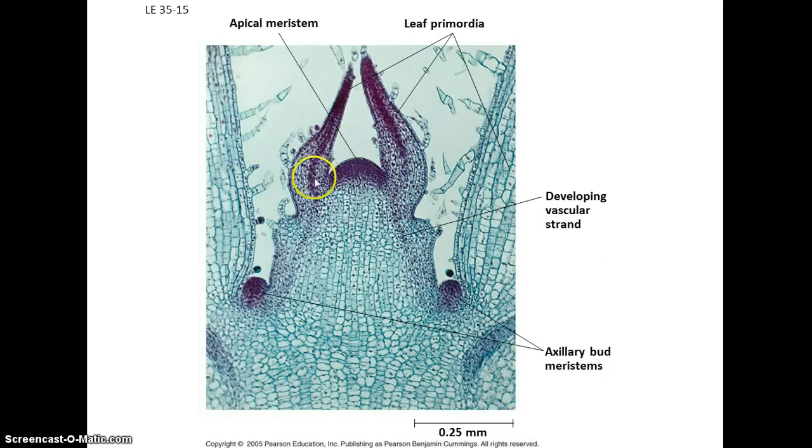So again, here's that apical meristem, active cell division here. Notice this would be a node here. We've got some leaves attached and we've got those axillary buds. We'll talk a little later about how the apical bud here, the apical meristem, basically suppresses the growth of these axillary buds and concentrates resources and cell division and growth at that tip, which causes the plant to get taller and taller.